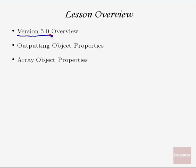Today's lesson is going to cover version 5.0 of the web application. It's going to cover basically inserting objects into our web application, changing it from an application that modeled items and departments as associative arrays into one that models them as actual PHP objects. We're also going to talk about outputting object properties within double-quoted strings and using the square bracket syntax to access values in array properties.